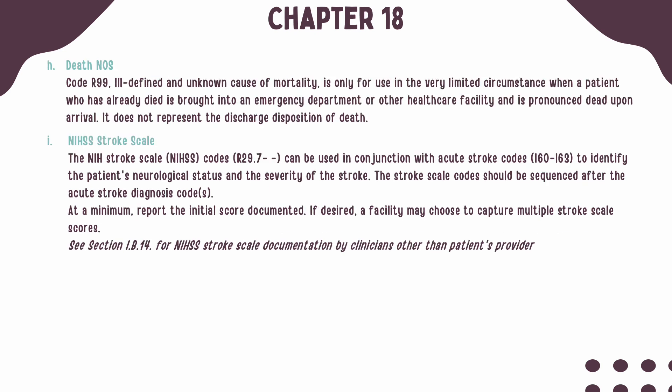Code R99 for ill-defined and unknown causes of mortality should be rarely used, only in the limited circumstance that the patient has been brought to the emergency department or facility and is pronounced dead on arrival. It should not be used solely on death at discharge. The NIH stroke scale codes, subcategory R29.7, can be used in conjunction with acute stroke codes I-60 through I-69, to identify the patient's neurological status and the severity of the stroke. When they are used, they should be sequenced following the acute stroke code.